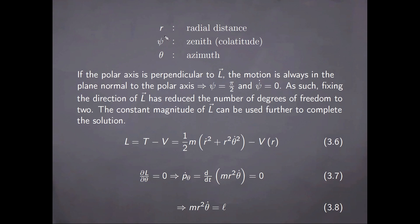The three coordinates thus involved are the radial distance, psi which is going to be the zenith or co-latitude, and theta which is the azimuth. If the polar axis is perpendicular to the orbital angular momentum, the motion is always in the plane normal to the polar axis. As such, the zenith angle is π/2 and the rate of change in time of the zenith angle is zero. Fixing the direction of the orbital angular momentum has thus reduced the number of degrees of freedom to 2.